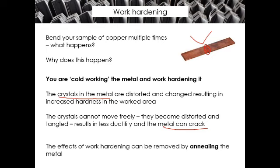Imagine you are a blacksmith making a copper bracelet. You've been shaping it, forming it, maybe hammering it to give it texture. What can happen is it can become work hardened, which means it's become quite hard, difficult to bend, difficult to indent. What you can do if you still want to work on it is remove this effect of work hardening by doing something called annealing.